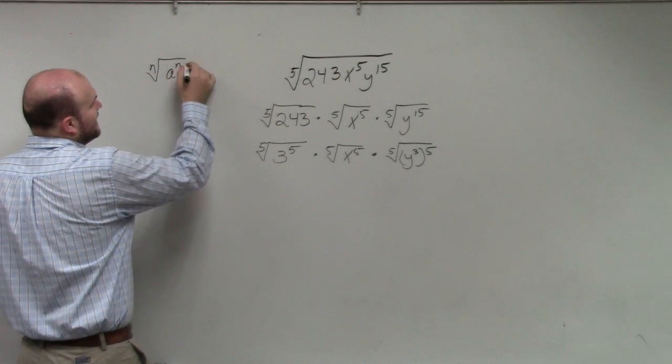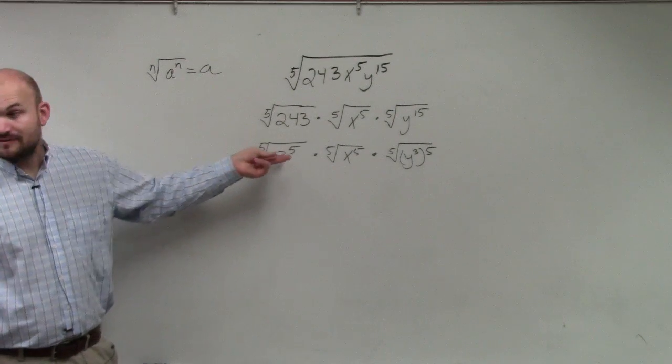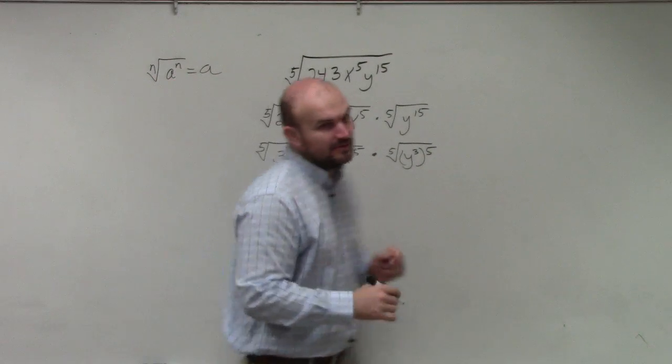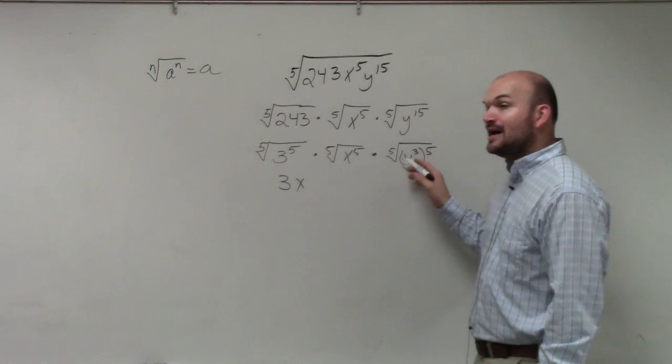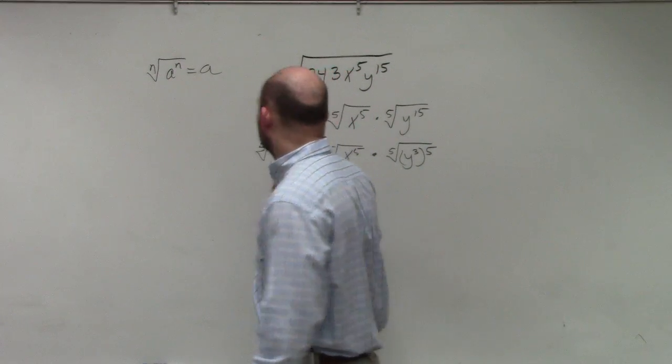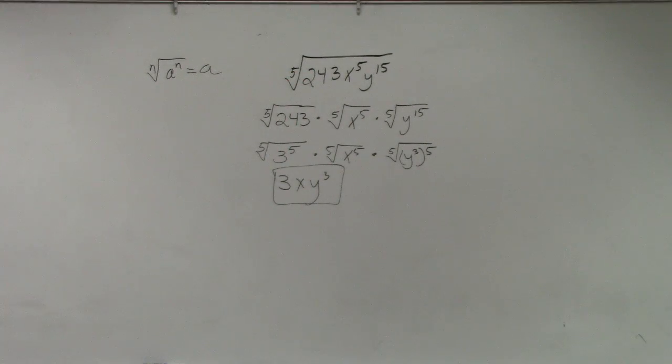n raised to a to the n equals a. So now, fifth root of 3 to the fifth power is 3. Fifth root of x to the fifth power is x. Fifth root of y cubed to the fifth power is y cubed. Done. Anybody have any questions? Preguntas.